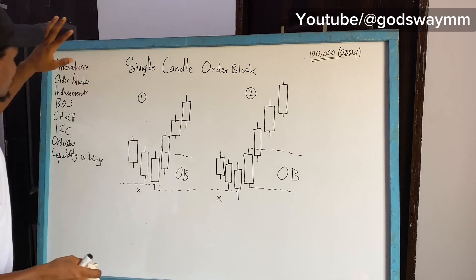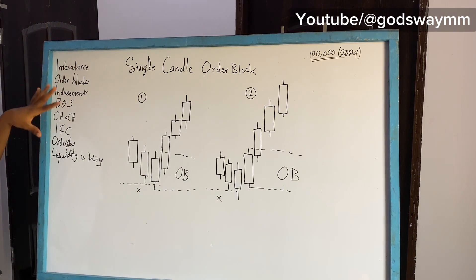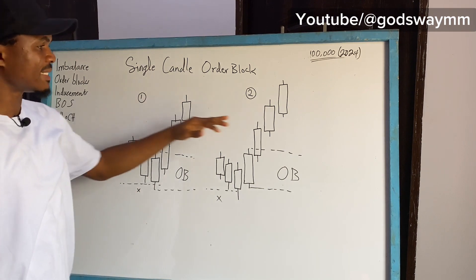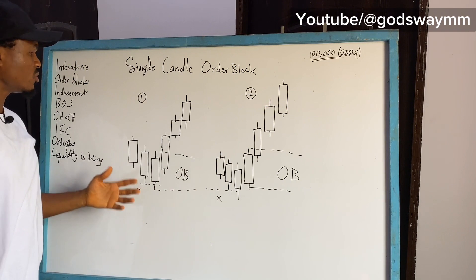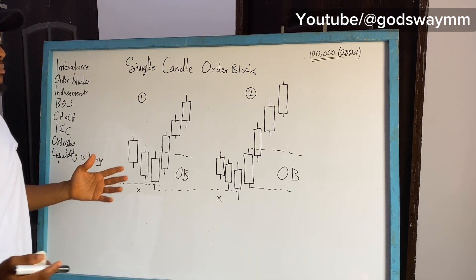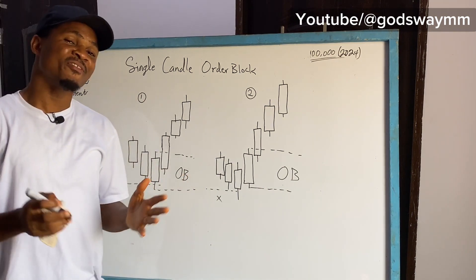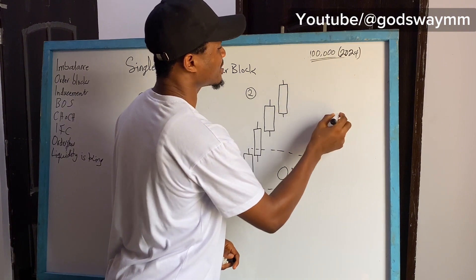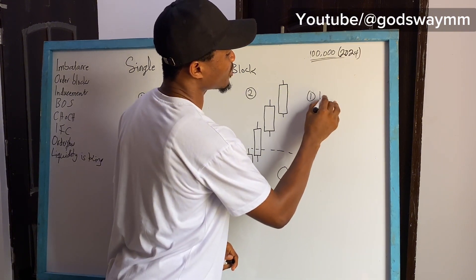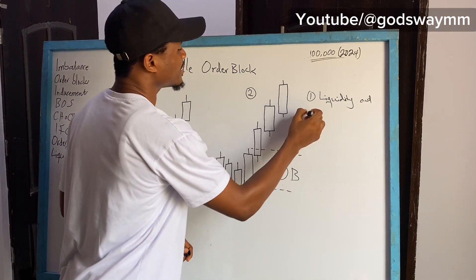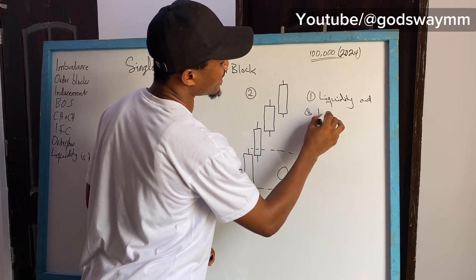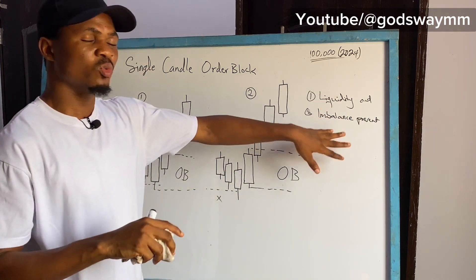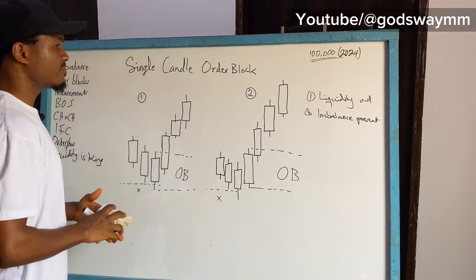Before we begin, I have some things on the board reminding me of what I've signed up for. I have diagram one and diagram two, which I'm using to explain what a single candle order block is. When talking about an order block, two conditions have to be met: first, the candle has to take out liquidity; second, there must be imbalance present. Without these two conditions, there is no order block.